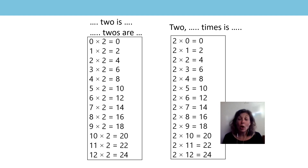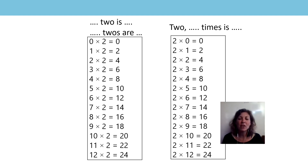Did you have a go at writing out your two times table both ways like Mrs Darnie asked you? Have you got it there? Fantastic. We're going to practice saying it together using our stem sentence at the top, and we're going to say the one on the left hand side first. Are you ready? You might need to help me out if I leave out some of the products.